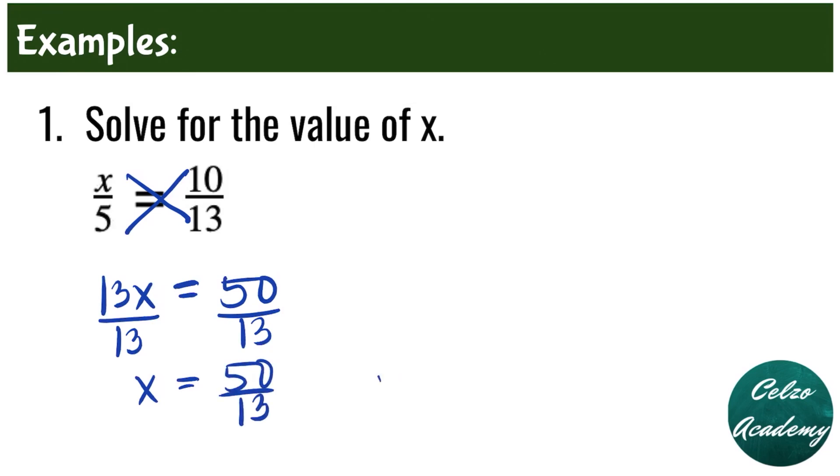Changing this into mixed number, 13 can go into 50 three times. 3 times 13 is 39, so this means we have a leftover of 11. So 50 over 13 is the same thing as 3 and 11 thirteenths.